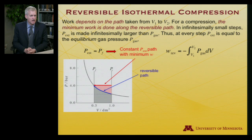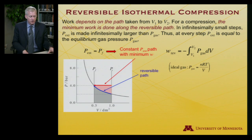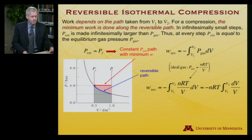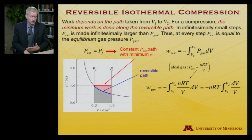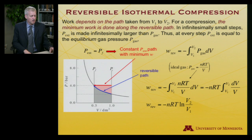Using the general expression, the reversible work (subscript 'rev') is minus the integral from V1 to V2 of the pressure dV. For a reversible process, the external pressure equals the gas pressure — meaning we're not in massive excess. The gas pressure from the ideal gas equation is nRT/V. Substituting: W_rev = minus the integral from V1 to V2 of nRT/V dV. Pulling constants out front gives minus nRT times the integral of dV/V, which evaluates to minus nRT times ln(V2/V1).